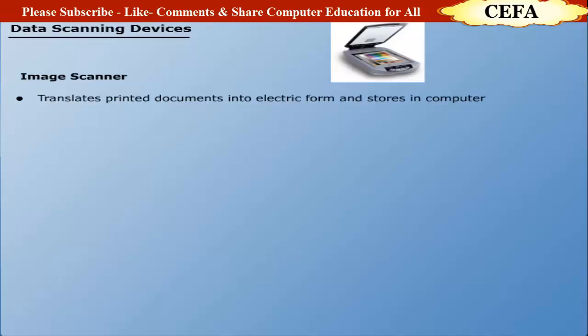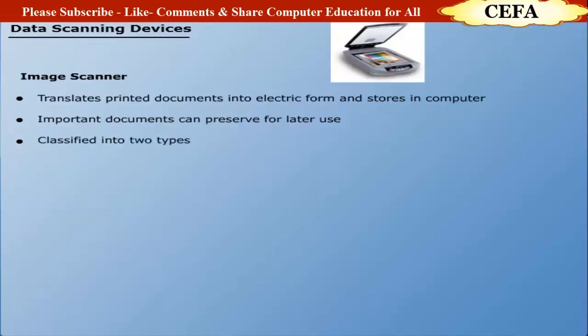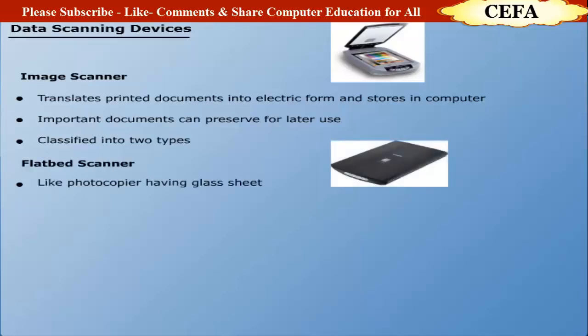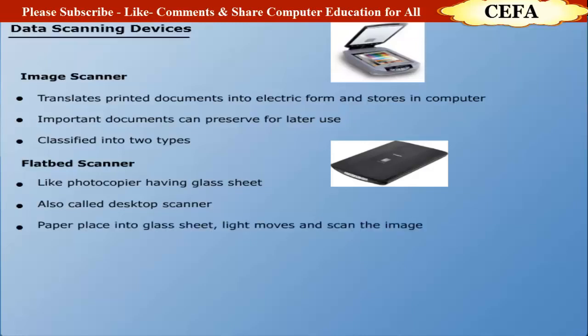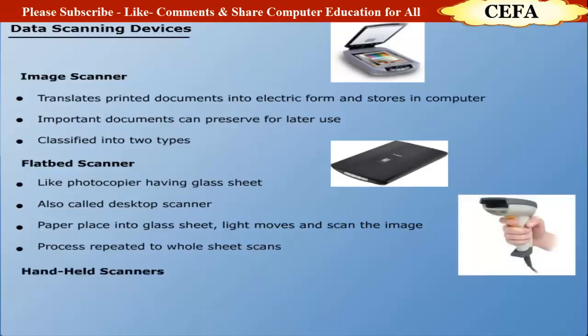Data scanning devices - Image scanner: An image scanner translates printed documents into an electronic format and stores them in the computer. Important documents can be preserved electronically for later use. Image scanners are classified into two types. Flat bed scanner is like a photocopier machine with a glass sheet, also called a desktop scanner. The paper is placed on the glass sheet and a light source is moved horizontally from one line to the next until all lines are completed.